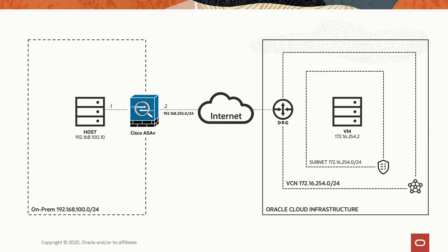In our network diagram, we have an on-premise host at 192.168.100.10 that sits behind our Cisco ASA firewall. The destination host is an instance in OCI with IP address 172.16.254.2. Those are the two hosts we'll be testing with after we've successfully built our IPsec tunnel.